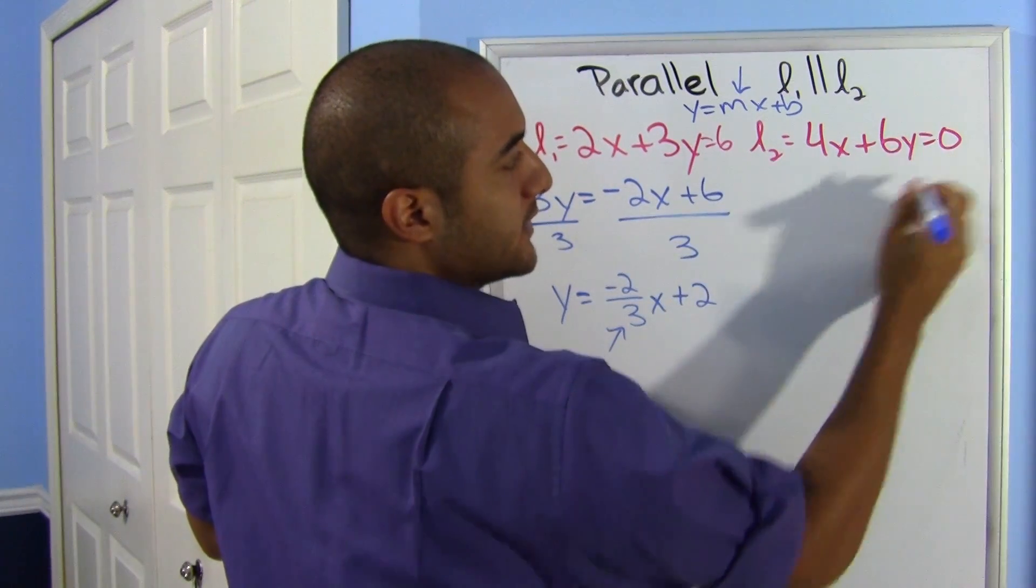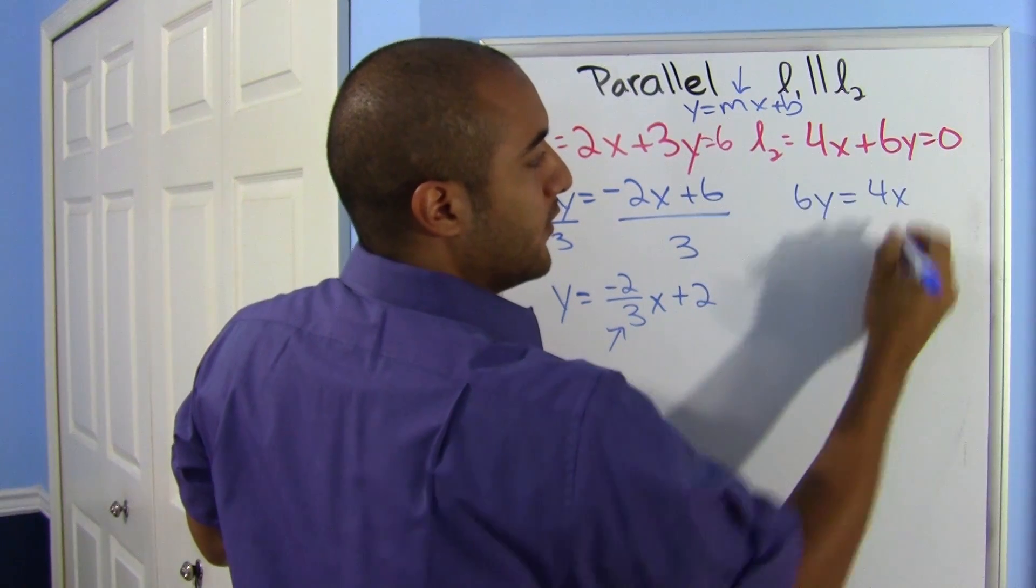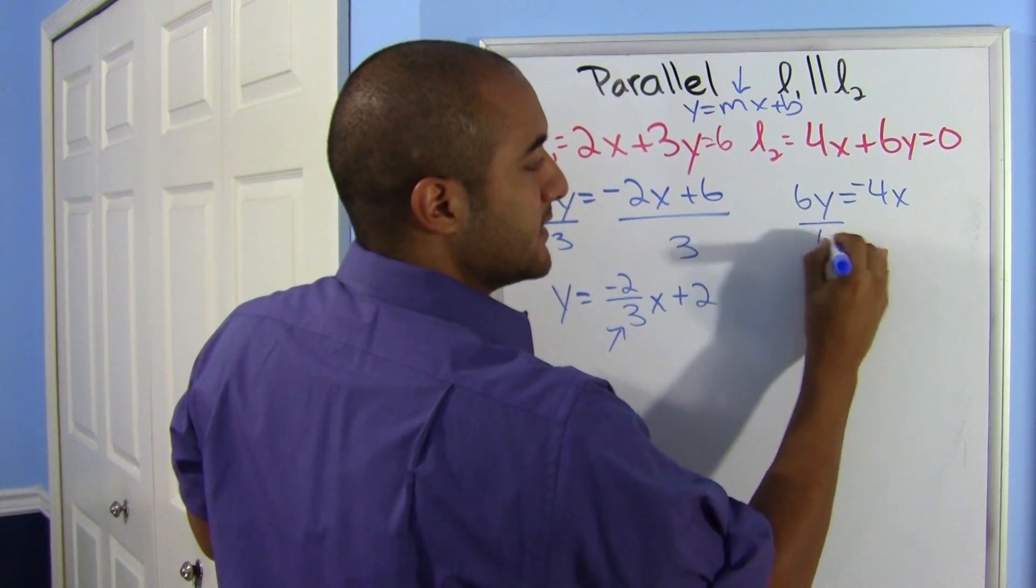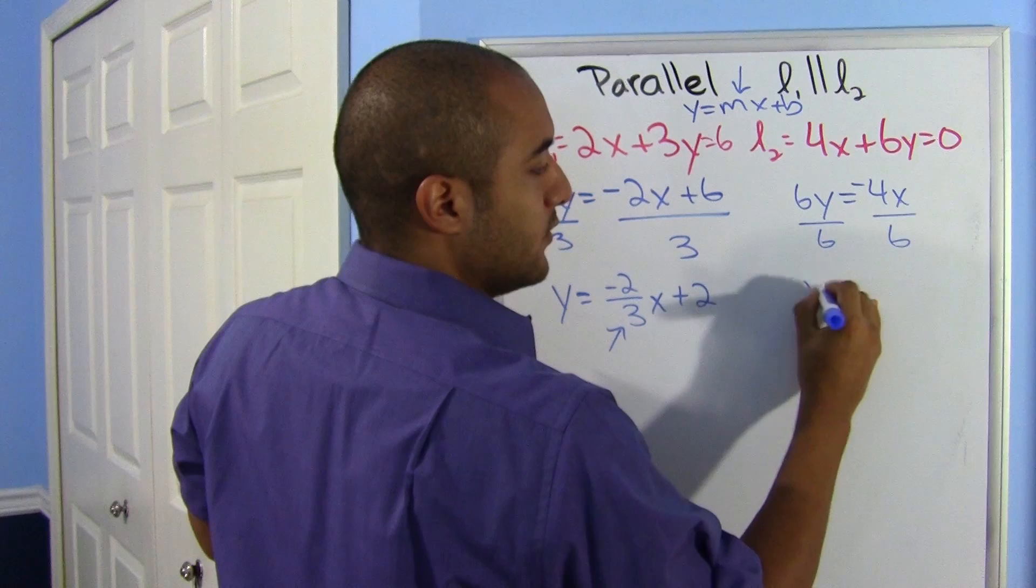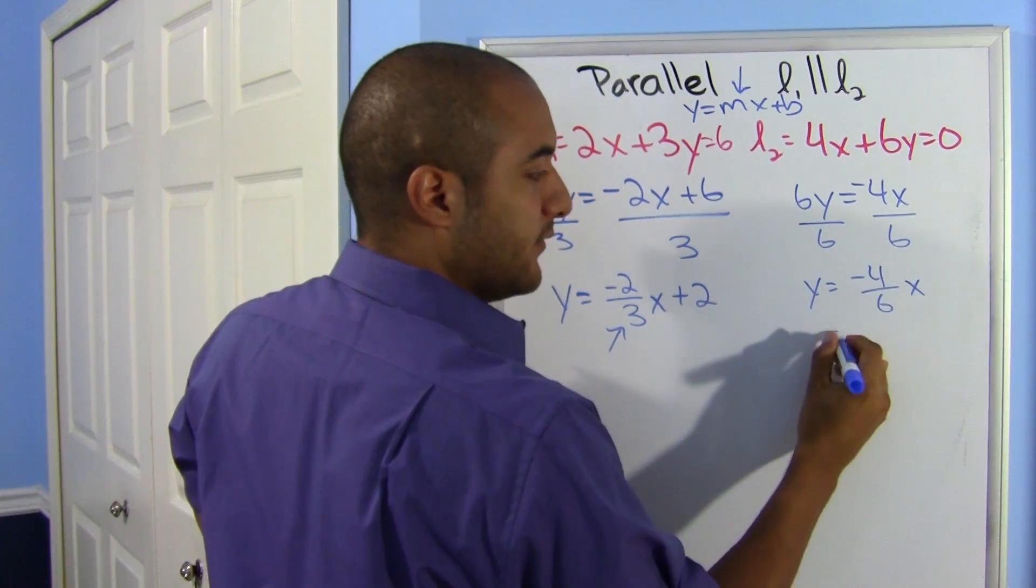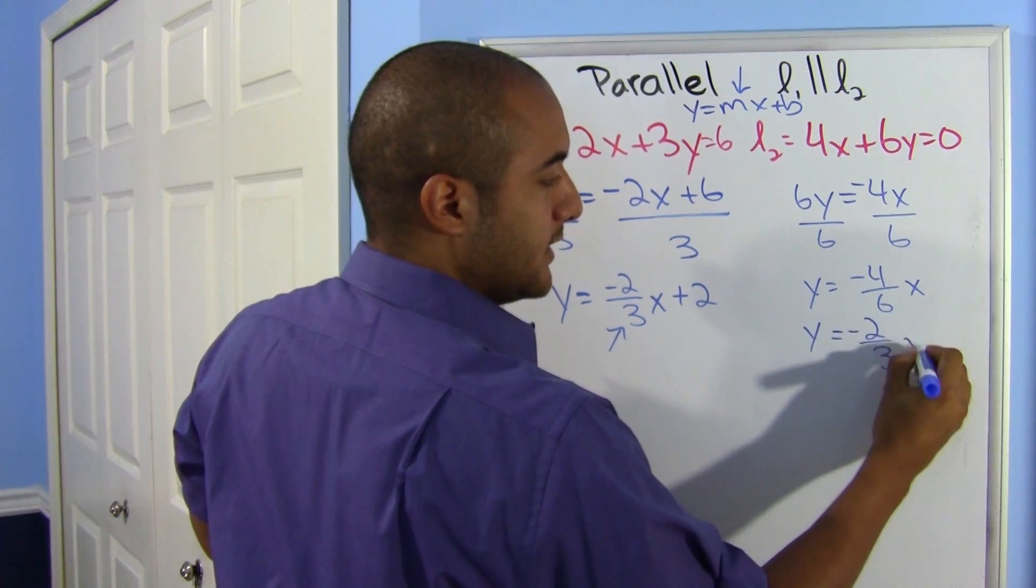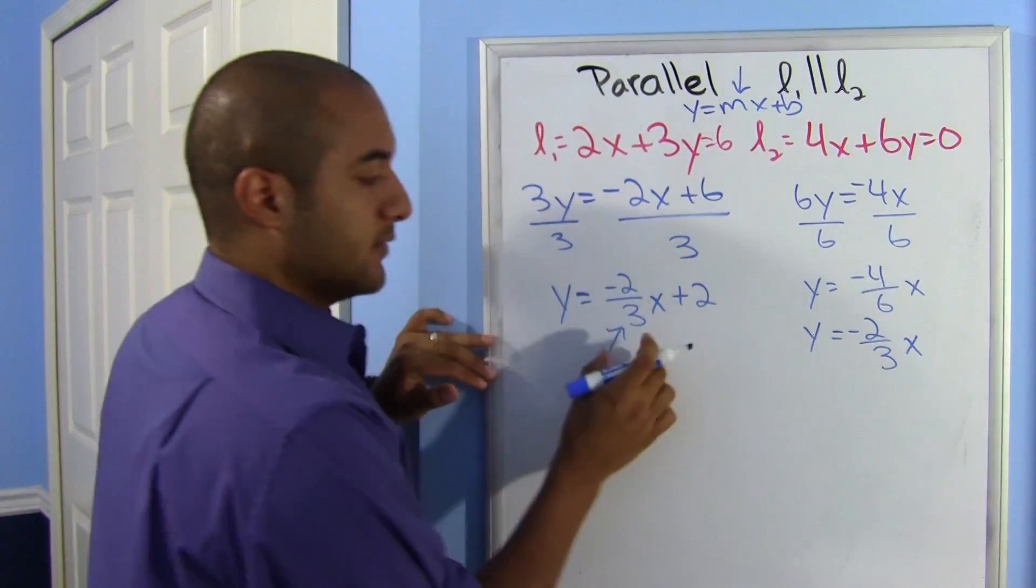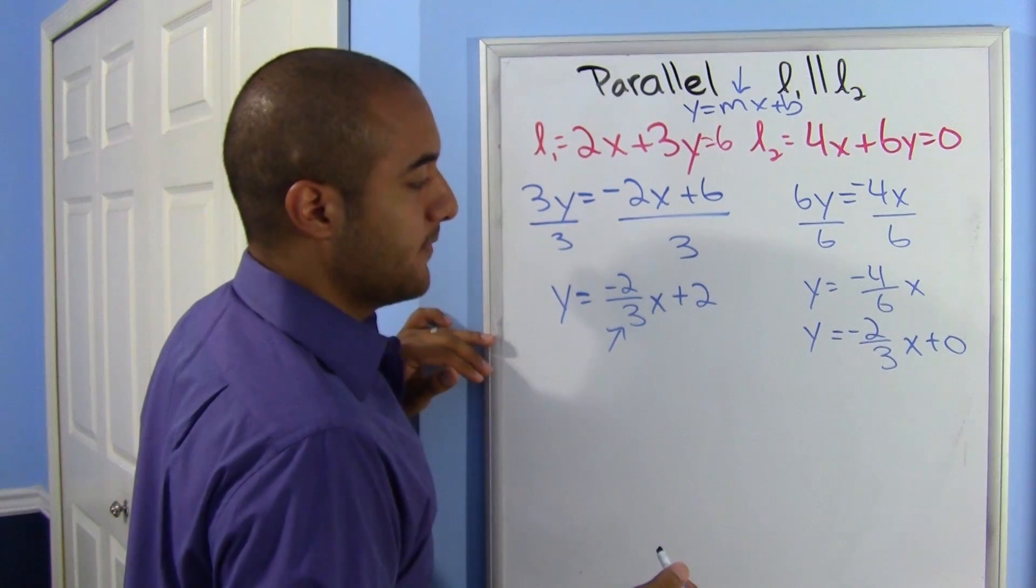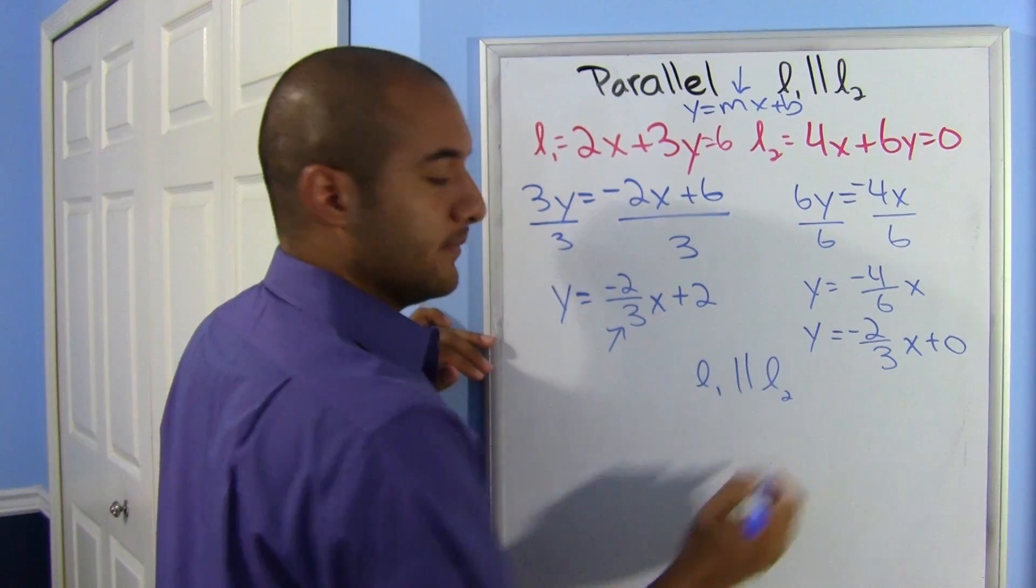Now I'll do the same thing for the second line. Move that 4x over and this is 6y equals minus 4x. Divide by 6. That's y equals negative 4 over 6 x. But this can be simplified. This can be simplified into negative 2 over 3 x. And look, same slope, different y-intercepts. This y-intercept is 0. So yes, these two lines are parallel.